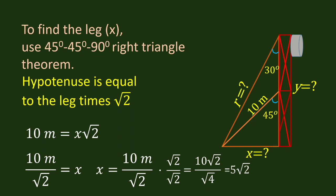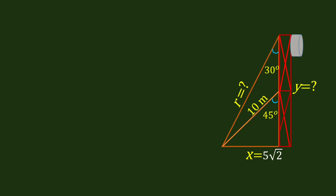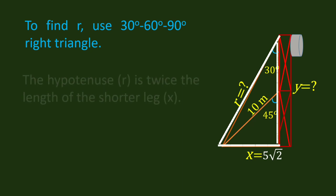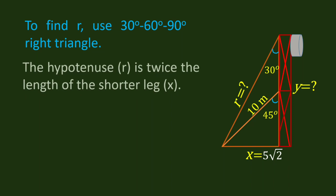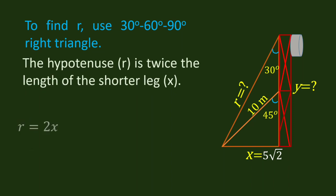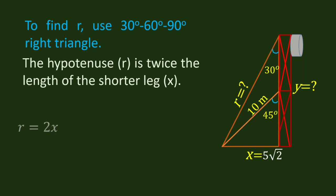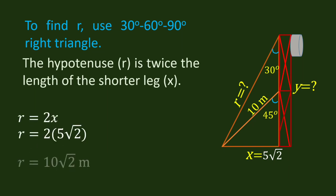Using this value of x, which is 5 square root of 2, we can now find the value of R, our hypotenuse, using the 30-60-90 degrees right triangle. In this triangle, the hypotenuse is twice the length of the shorter leg. Our shorter leg is x, which is 5 square root of 2. So R is equal to 2 times 5 square root of 2, or 10 square root of 2.